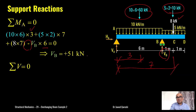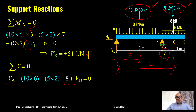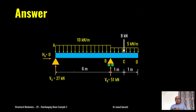If you simplify these values you get VB = 51 kilonewtons positive, meaning upward. Then summation of vertical forces = 0: upward forces VA and VB are positive, and downward forces are the 60 kN UDL, 10 kN UDL, and 8 kN point load. Substituting VB gives VA = +27 kilonewtons — positive means upward. Summary: HA = 0, VA = +27 kN, VB = +51 kN.